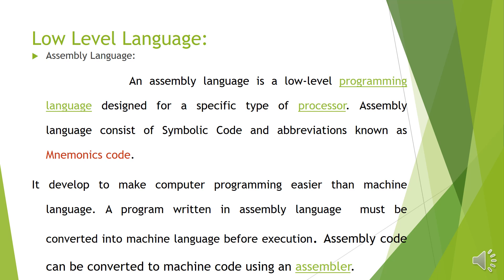Assembly code can be converted into machine code using a special assembler. An assembler is basically a translator. We will discuss different types of translators in another tutorial, for example: compiler, interpreter, and assembler.